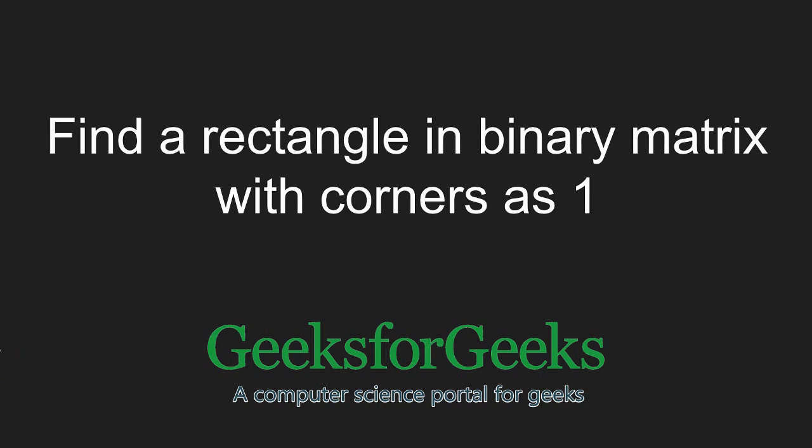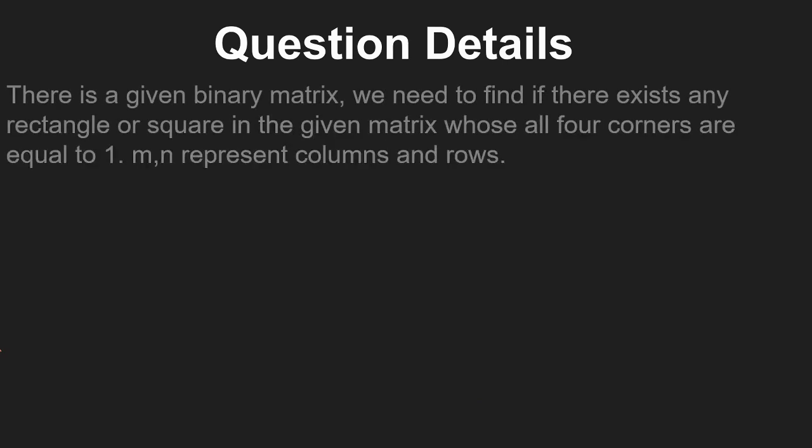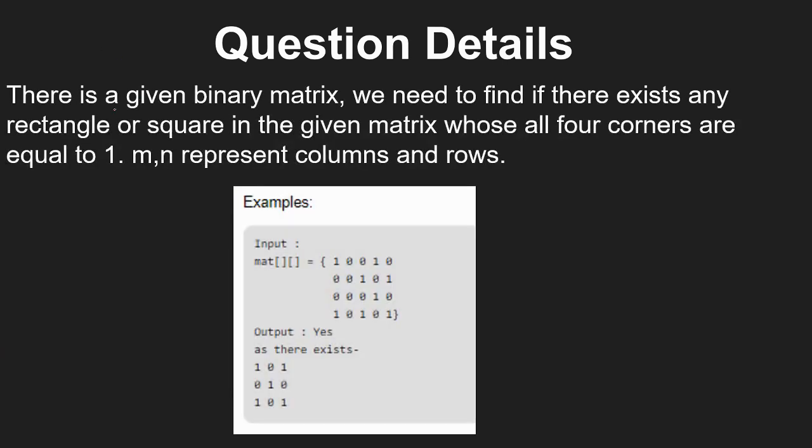Hi guys, welcome to GeeksforGeeks. In this tutorial we will learn how to find a rectangle in a binary matrix with corners as one. Let's understand the question: given a binary matrix, we need to find any rectangle or square in a given matrix whose four corners are equal to one.